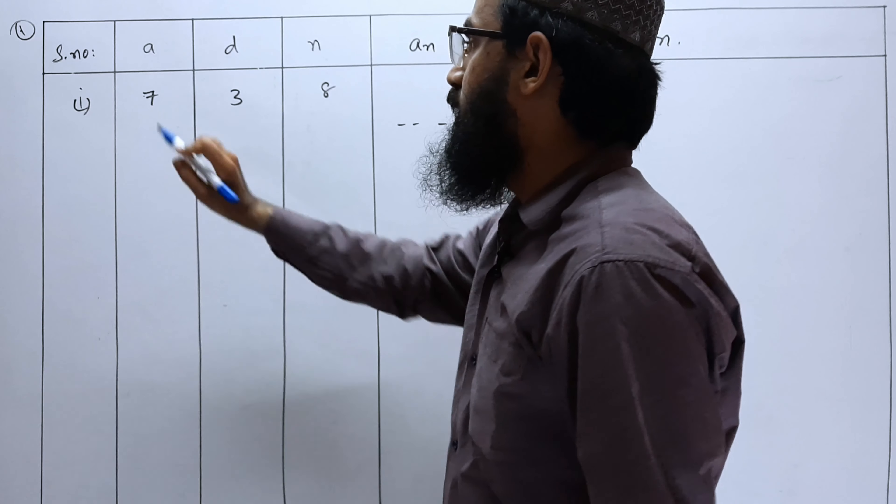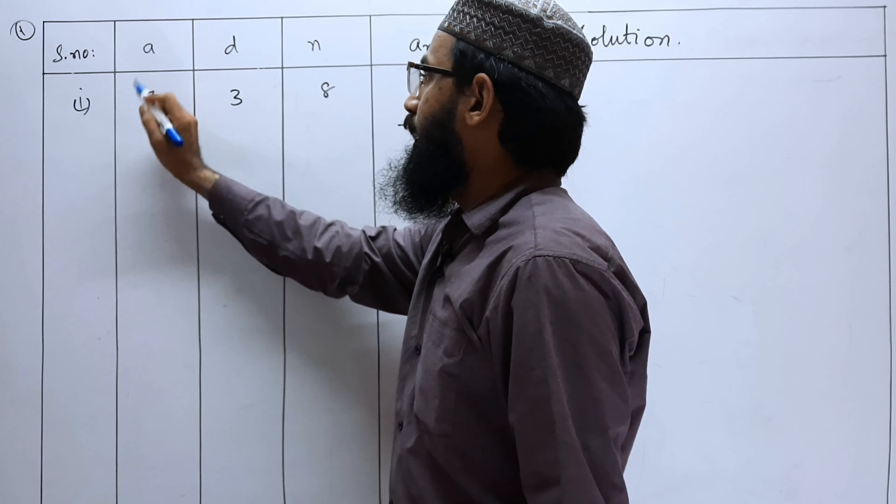First bit: A is given as 7, that is the first term; common difference D is given as 3; N is 8, and we have to find the nth term. In the solution, let us use the nth term formula: AN equals A plus (N minus 1) into D. Let us substitute those values. AN equals 7 plus (8 minus 1) into 3.